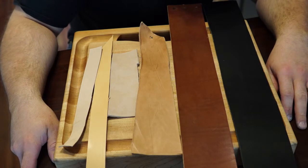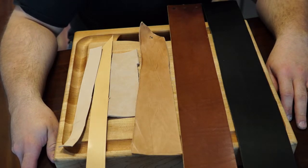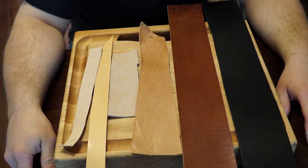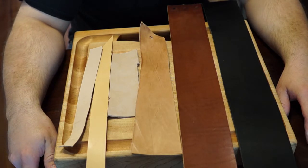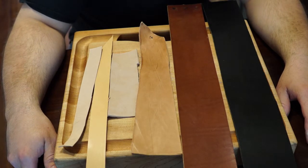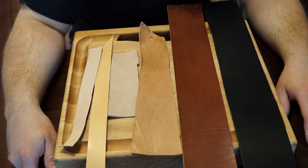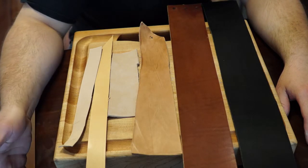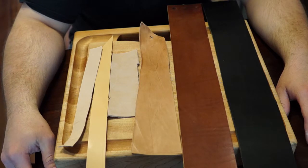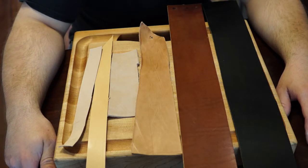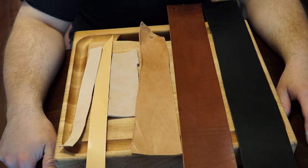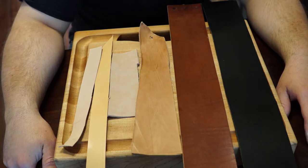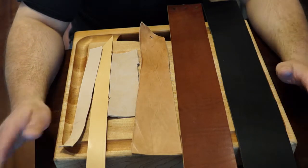You have two major types of tanning: you have chrome tan and veg tan. Veg tan is using vegetable tannins, it's a more natural way of tanning leather. It takes longer so it's more expensive. Chrome tan is using harsher chemicals, added chromium, that's how they get it to tan the leather quicker. That's stuff that you usually see like in your car, a lot of clothes, upholstery.